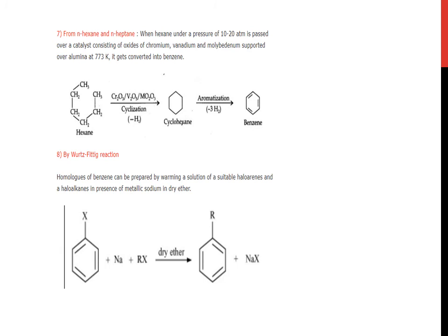From normal hexane: when hexane under a pressure of 10 to 20 atmosphere is passed over catalyst consisting of oxides of chromium, vanadium, and molybdenum supported on alumina at 773 kelvin, it gives benzene. Most important reaction by Wurtz-Fittig reaction: homologues of benzene can be prepared by warming a solution of suitable halobenzene and a haloalkane in presence of metallic sodium in dry ether. Halobenzene when treated with sodium and RX in presence of dry ether gives substituted benzene ring and NaX.